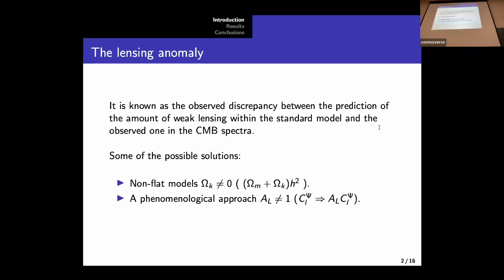It involves this phenomenological parameter AL, which is introduced in order to rescale the gravitational potential power spectrum. So if we have a value greater than 1, then you have more lensing than what is predicted by the model. And of course, for AL equals 1, you recover the theoretically predicted value.